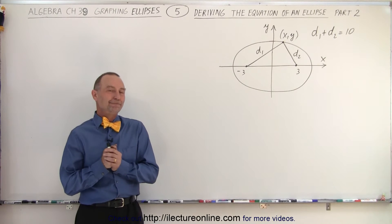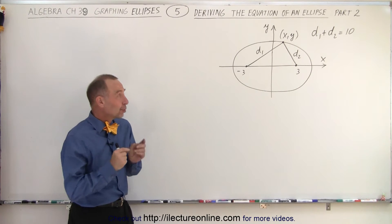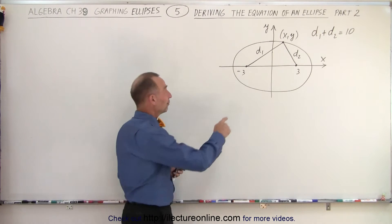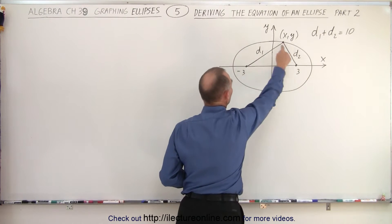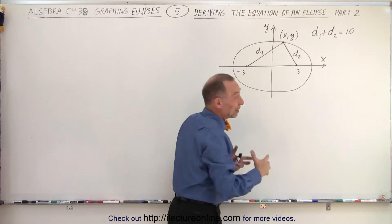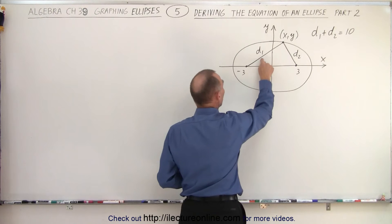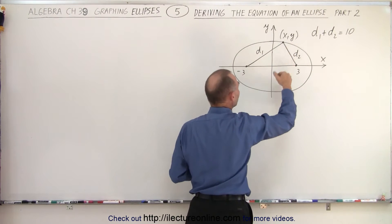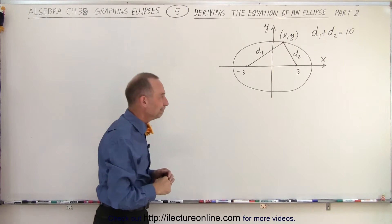Welcome to our lecture online. So how do we come up with the equation for this circle — knowing where the foci are and knowing that the length of the string used to draw the ellipse is equal to 10 units. We know that d1 plus d2, the two ends of the string so to speak, add up to a length of 10.